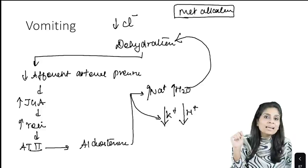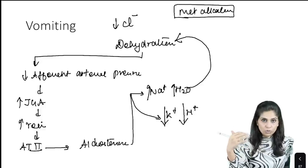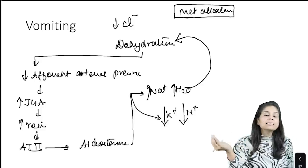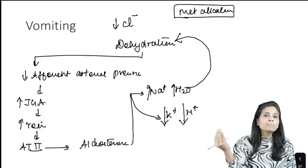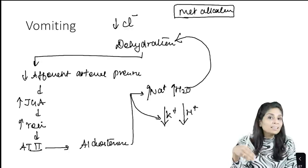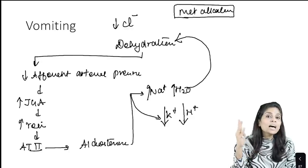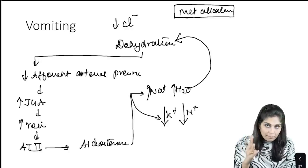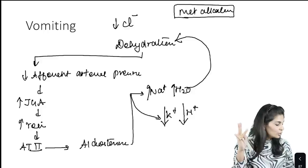What does aldosterone cause? It causes sodium and water reabsorption, and reciprocally causes potassium and H+ secretion. This results in hypokalemia and metabolic alkalosis.